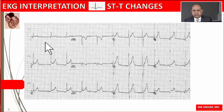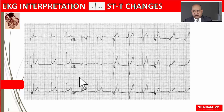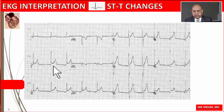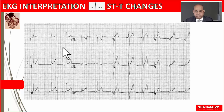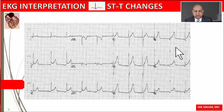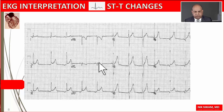Here's an example of a normal variation of ST segment and T wave changes seen in young people. We see ST elevation in multiple leads along with some peaked T waves, with the ST segment coving upwards. These changes are known as early repolarization. Early repolarization can be seen in young patients with no evidence of organic heart disease. We need to differentiate this from pericarditis, where there may be associated tachycardia and PR depression.